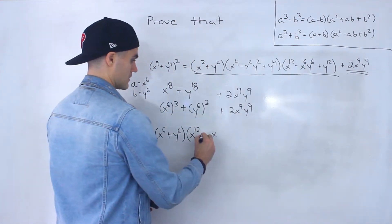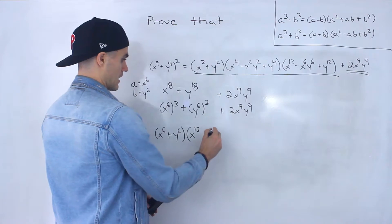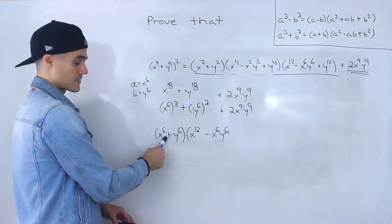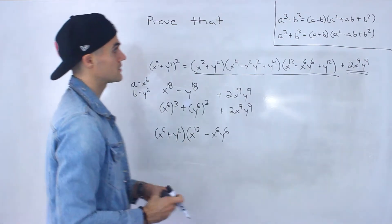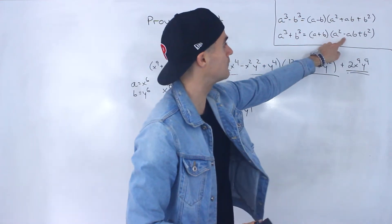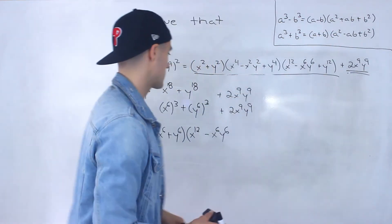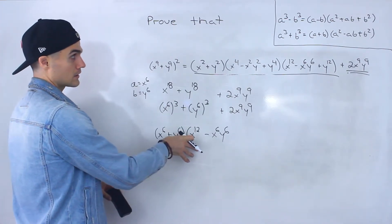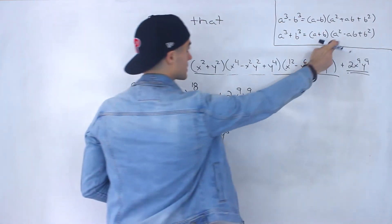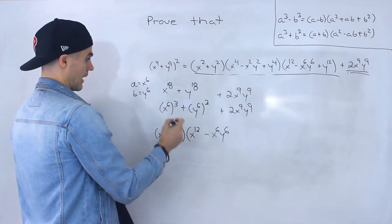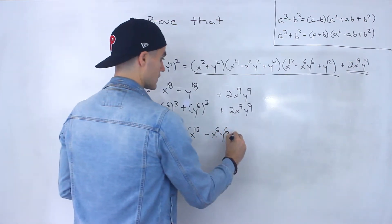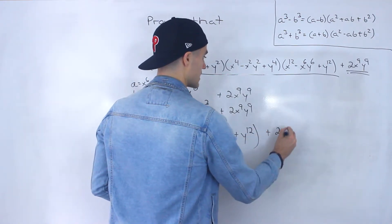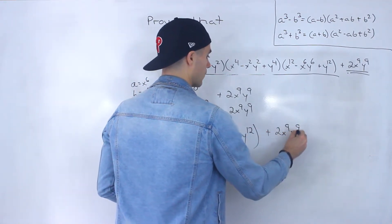Since this is a sum of cubes, there's going to be a minus here. The way I caught that is: with these formulas, the signs are going to be opposite. So notice we got a positive and then a minus, and then a minus and a positive. So right away when I wrote a positive there I knew something was wrong. So we're doing a sum of cubes here, meaning there's a minus. Then x to the 6 times y to the 6 gives us x to the 6 y to the 6, and y to the 6 squared gives us y to the 12. And then we still have this 2x to the 9 y to the 9 at the end.